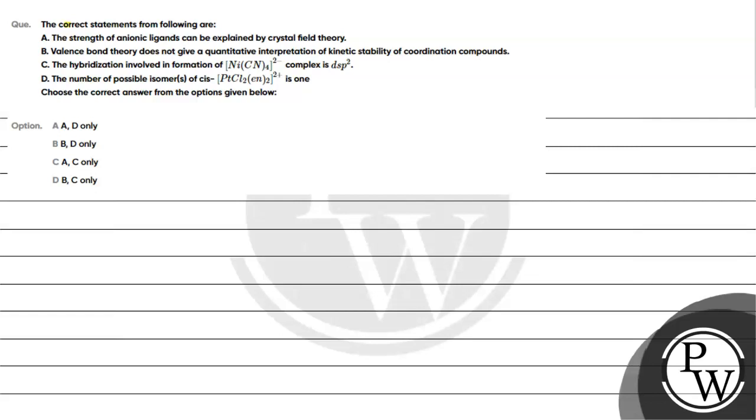Let's read this question. The correct statements from the following are: Option A - the strength of anionic ligands can be explained by crystal field theory. Option B - valence bond theory does not give quantitative interpretation of kinetic stability of coordination compounds. Option C - hybridization involves formation of NiCl4(2-) complex is dsp2. Option D - the number of possible isomers of cis-PtCl2(en)2(2+) is one.